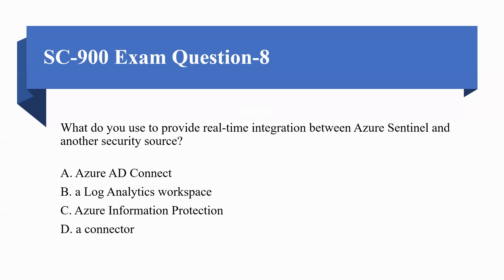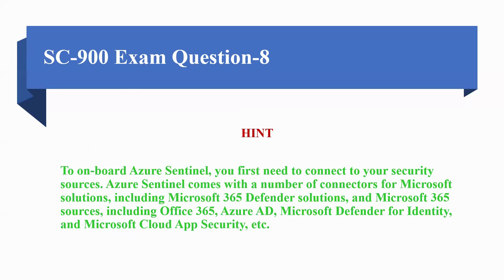Moving towards the next question: what do you use to provide real-time integration between Azure Sentinel and another security source? Options are: A — Azure AD Connect, B — a log analytics workspace, C — Azure Information Protection, D — a connector. The correct option is D, a connector. To onboard Azure Sentinel, you first need to connect to your security sources. Sentinel comes with connectors for Microsoft solutions including Microsoft 365 Defender, Office 365, Azure AD, Microsoft Defender for Identity, and Microsoft Cloud Security.